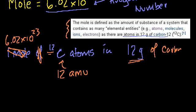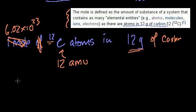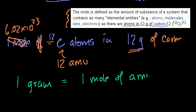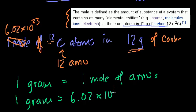So another way to think about it is 1 gram is equal to 1 mole of atomic mass units, or you could write 1 gram is equal to 6.02 times 10 to the 23 atomic mass units.